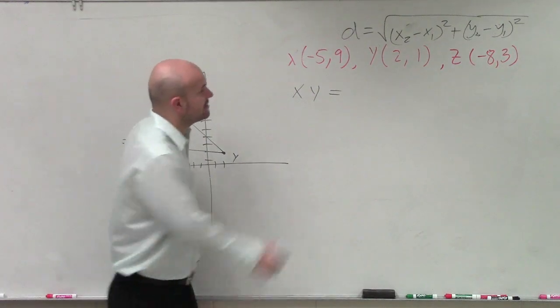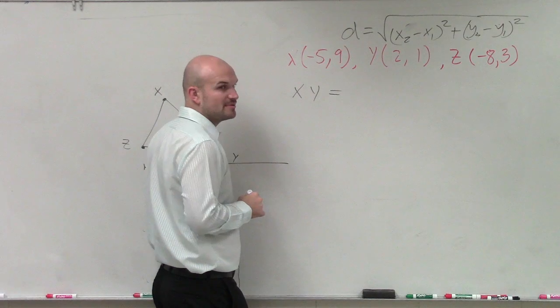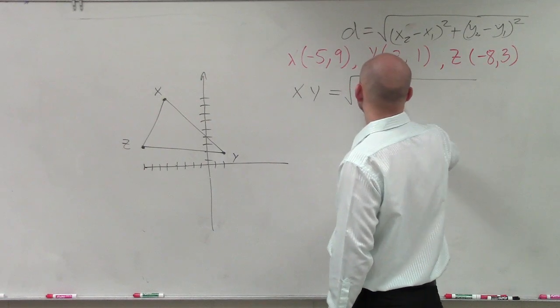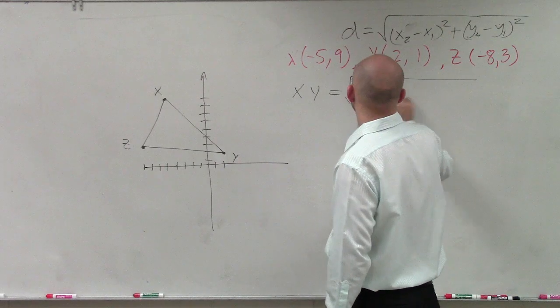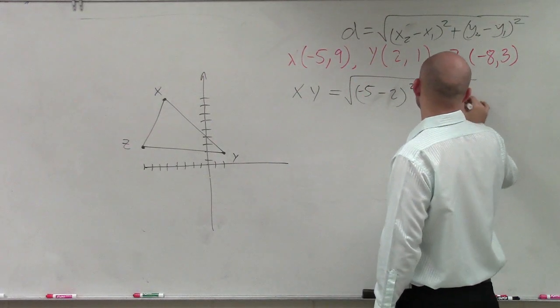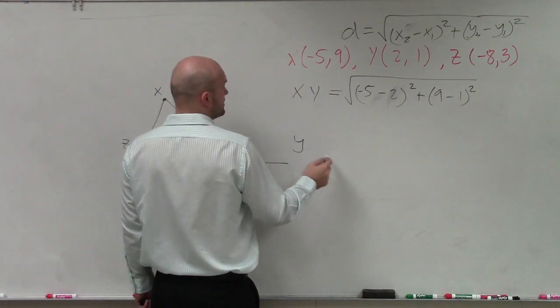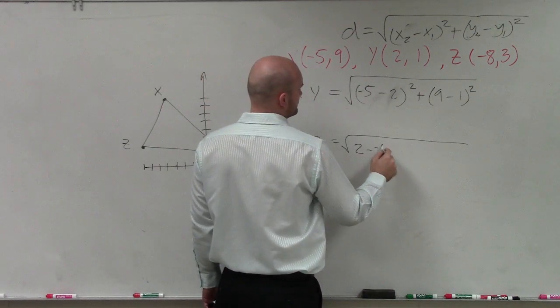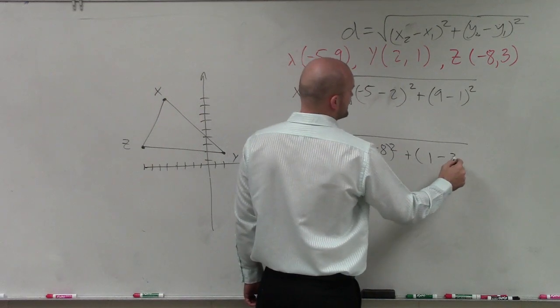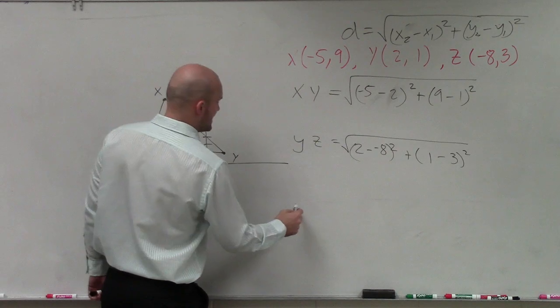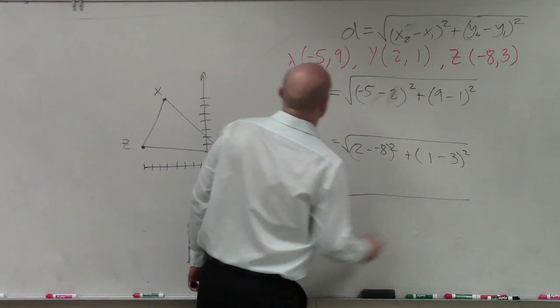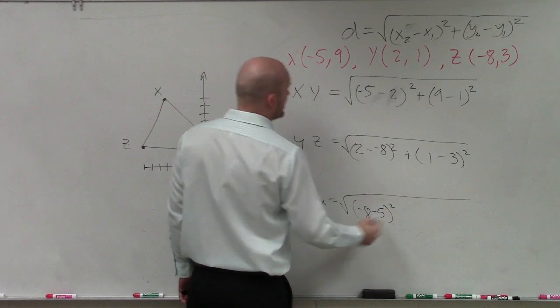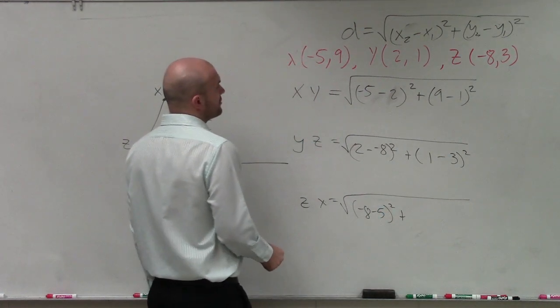So if I want to find the distance of X and Y, I just need to determine which is going to be my x1, which is going to be my x2. So this would be the square root of negative 5 minus 2 squared plus 9 minus 1 squared. I'm just going to do all of these right now. What about if I have to do YZ? YZ is going to be 2 minus negative 8 squared, and then plus 1 minus 3 squared. And then what about ZX? If I did ZX, I'm going to subtract the Z's from the X, so it would be negative 8 minus 5 squared plus 3 minus 9.